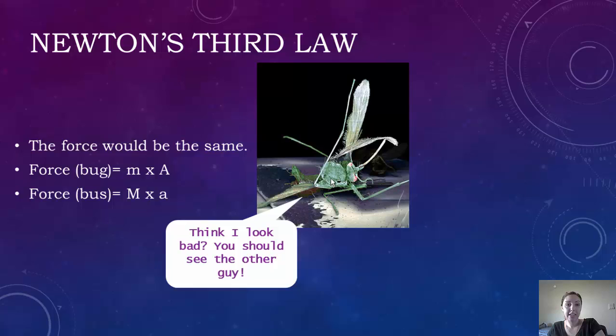And that's because the force of the bug would be mass times the acceleration. And the force of the bus is also going to be mass times acceleration. So they're going to be equal because you still have the same formula. It's just the numbers are going to be switched. But either way, when you multiply it, you're going to come up with the same answer.